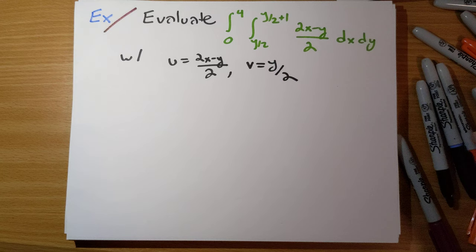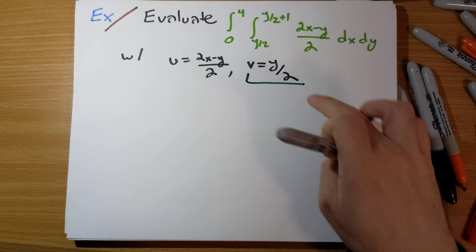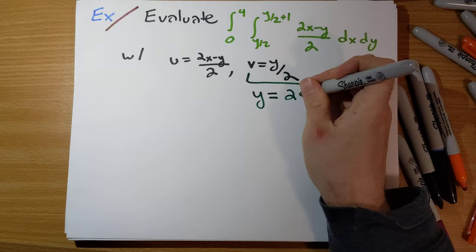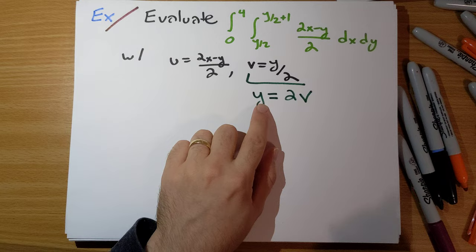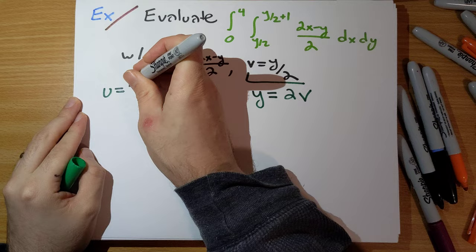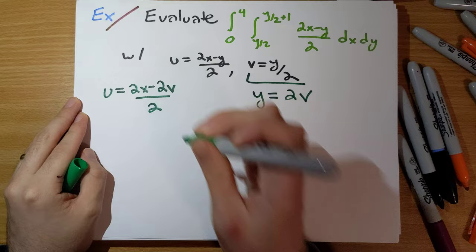So from this here, v is equal to y over 2. Multiplying on both sides by 2 gives us y is equal to 2 times v. And so then, if y is equal to 2 times v, we can substitute that into here. u is equal to 2x minus y is 2v, all of that divided by 2.